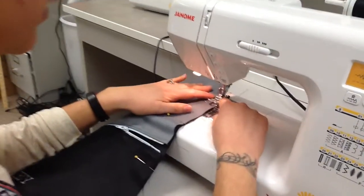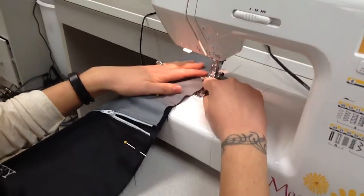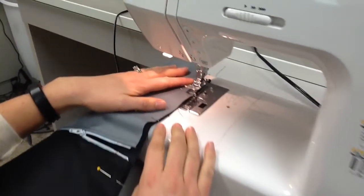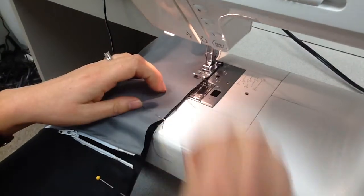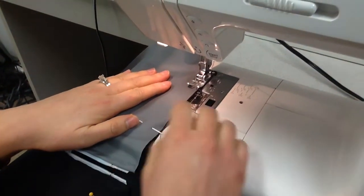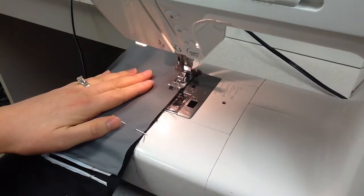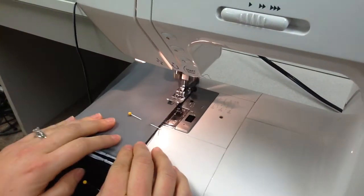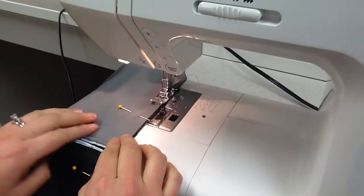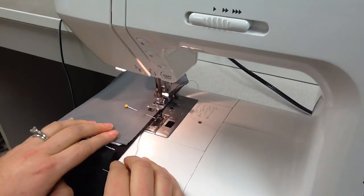Then I'm going to line up the edge of my fabric with the 2 eighths little dash on my bobbin plate cover. I'll put my foot down. And then I'm just going to sew my straight line down the side. Now you don't have to backstitch this time. You can just sew your straight line a quarter of an inch away from the edge.